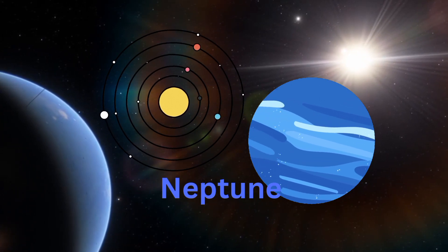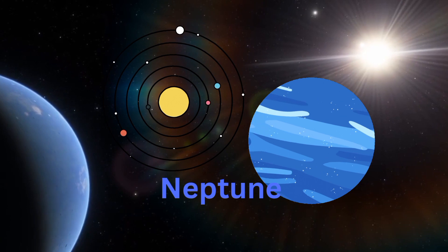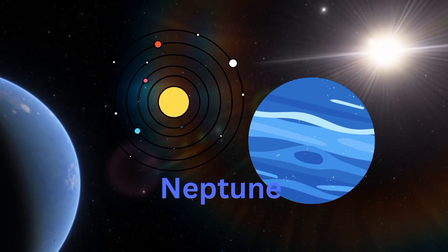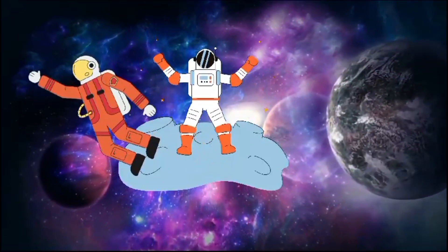My name is Neptune. I am blue in color, the eighth planet from the Sun. I have too many storms in my atmosphere and I'm the furthest planet from the Sun.